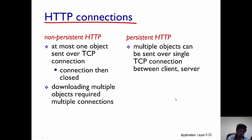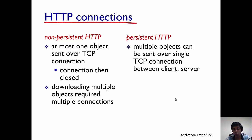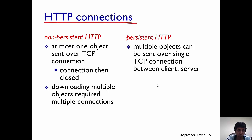There are two different types of HTTP connections. One is a non-persistent HTTP connection, and the other is a persistent HTTP connection. In a non-persistent HTTP connection, at most one object can be sent over a TCP connection — you establish a connection, get the object, and then close the connection. For multiple objects, you create multiple connections. In persistent HTTP, multiple objects can be sent over a single TCP connection.